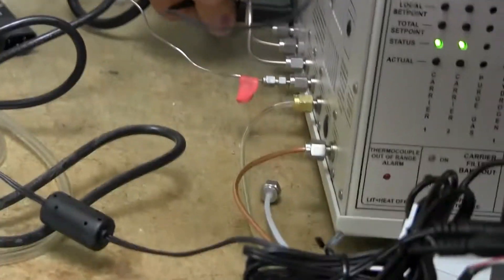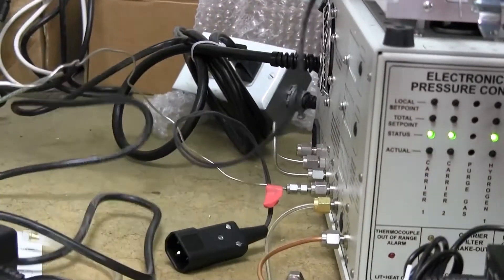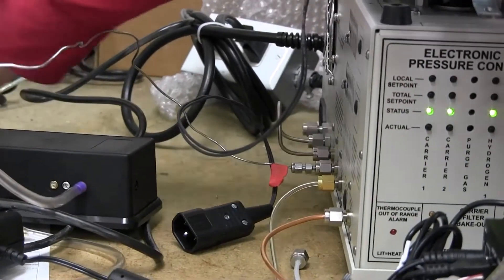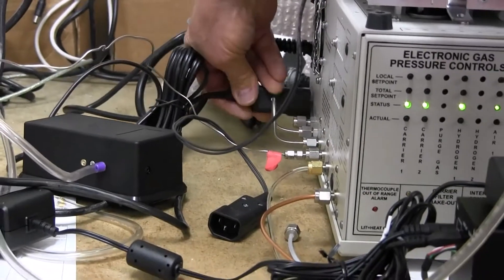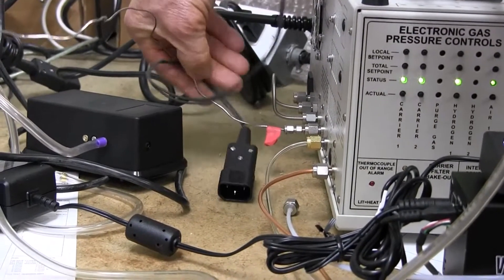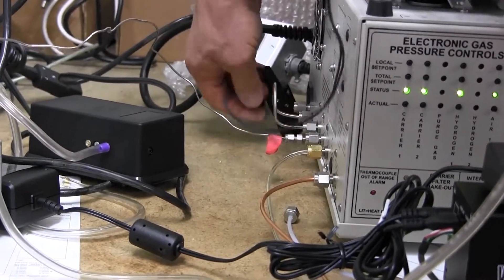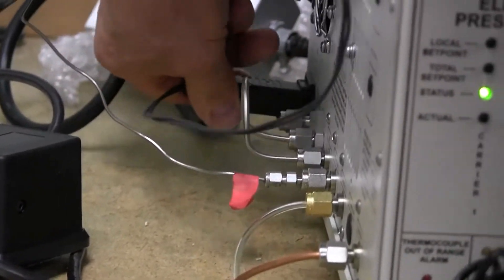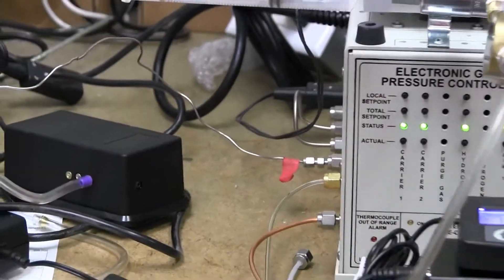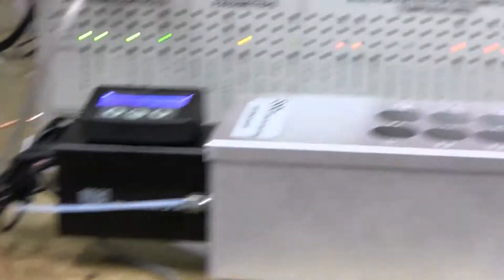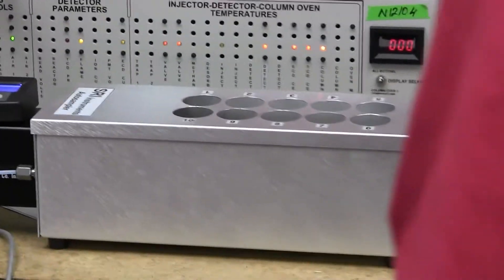So you could also plug a vacuum pump into the same thing. So it's the same power outlet that the vacuum pump would plug into is what powers this auto sampler control. Okay, so physically, that's how the auto sampler connects.